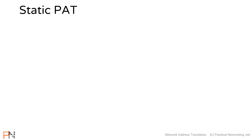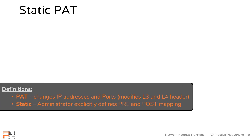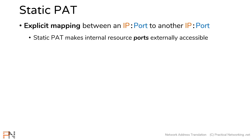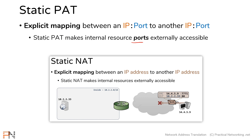Pulling up our definitions from the NAT terminology lesson: a static translation is one where the administrator explicitly defines the pre-translation and post-translation mappings, and a PAT is a modification of IP addresses and ports. Combining those together, a static PAT is an explicit mapping between one IP address and port to another IP address and port.